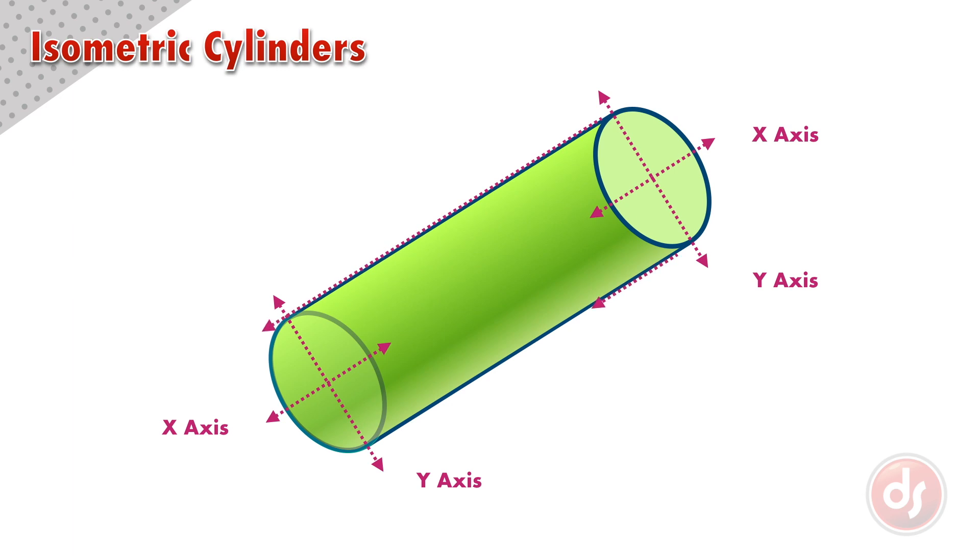The lines that connect the ellipses will be Z lines, and a line that connects the X axis of the two ellipses together would also be a Z line.